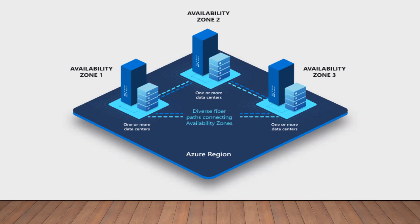When you go to the Azure portal to create a resource, availability zones show up as follows: if you choose a region that supports availability zones, you'll get options like availability zone one, availability zone two, or availability zone three.